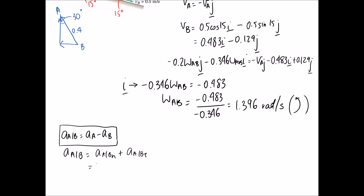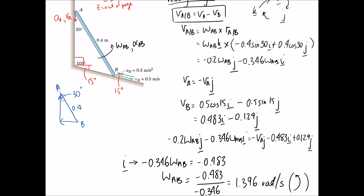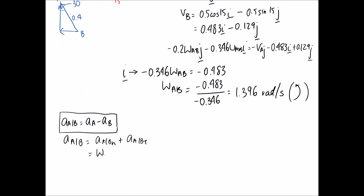For the acceleration of A relative to B, we need to consider both normal and tangential directions. The normal direction equation is omega cross omega cross R. For A and B, since we're looking at their relative motion through the rigid body, omega is just omega AB and R is the radius of A relative to B. The tangential part equals alpha cross R, where alpha is the angular acceleration between the two points, called alpha AB, and the radius is the same A slash B. This is why we went to the effort of working out omega AB beforehand.